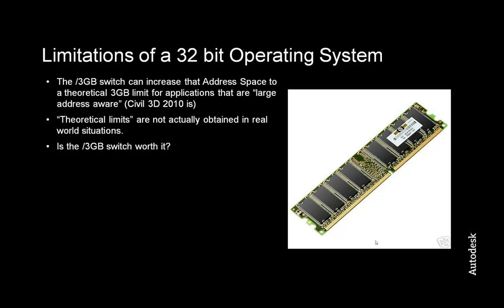So is there anything that can be done to a 32-bit operating system to help performance? First, make sure that you are maxed out to 4GB of installed RAM. Unfortunately, I see customers all too often who are trying to squeak by with only 2GB of RAM. Aside from upgrading your physical RAM, you can also enable the 3GB switch. This switch can increase the per-application limit of the address space from 2 to 3GB. The application must be large-address aware, but 2009 and 2010 versions of Civil 3D can do this. Again, these are theoretical limits — you are going to hit that memory ceiling sooner than 3GB, probably closer to the range of 2.6–2.7GB.